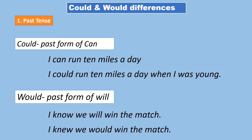For example: 'I can run 10 miles a day' is the present tense — it means I have the ability now. In the past tense: 'I could run 10 miles a day when I was young,' meaning I had that ability in the past. For 'would': 'I know we will win the match' is present. In past tense: 'I knew we would win the match' — the match is finished and I already knew we would win.